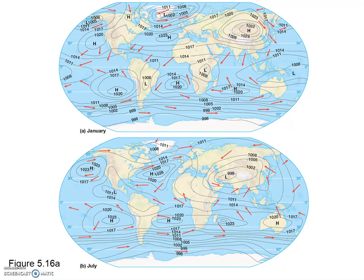What happened? The continental interiors heat up faster and to a greater extent than the oceans in summer. As the air warms, it expands, becomes less dense, so it rises, and that moving of molecules away from the Earth's surface creates a low pressure cell. What was once a characteristically high pressure cell has actually transformed into a fairly low pressure cell.